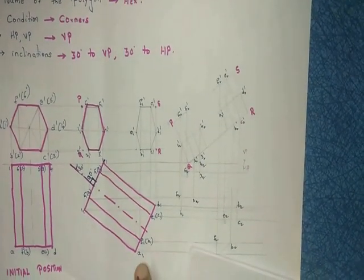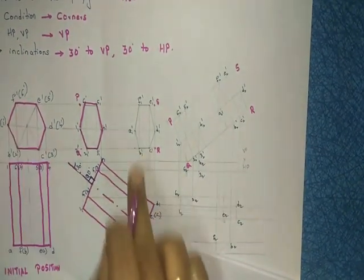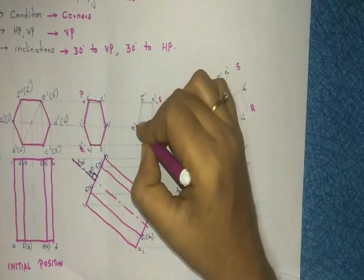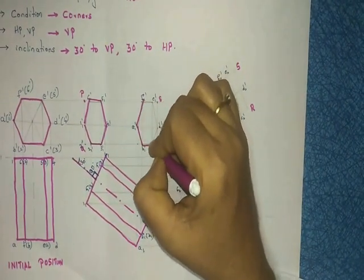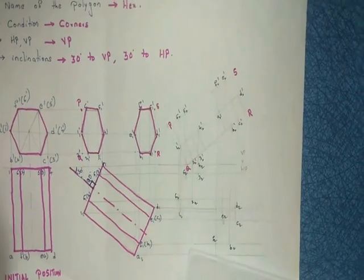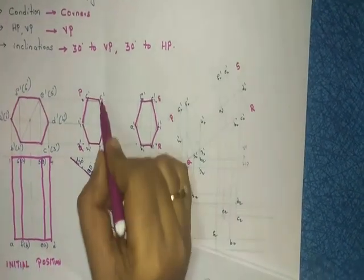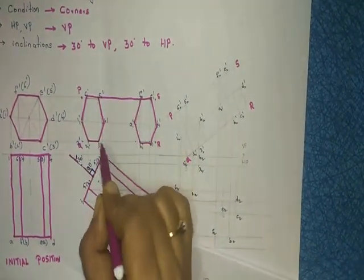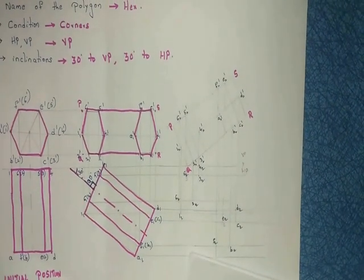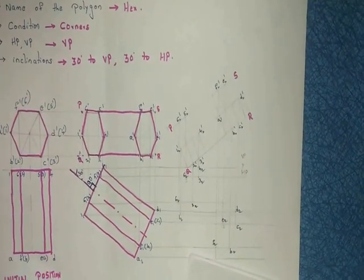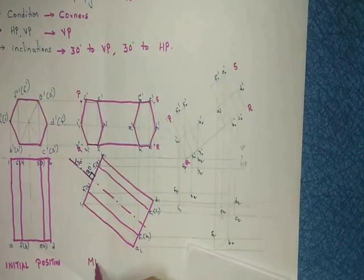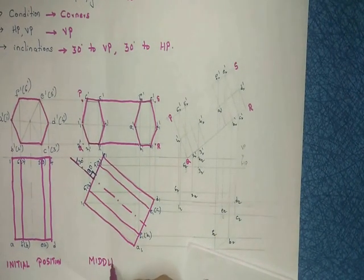Write the alphabets: from A to A, B to B, C to C — join all of them and you get another hexagon. This together forms the prism shape, and this is your middle position.